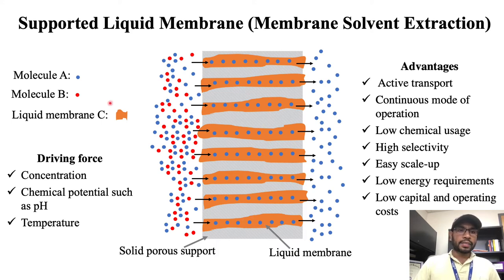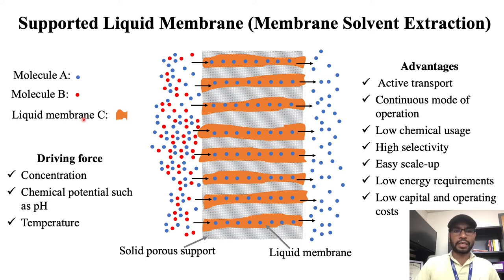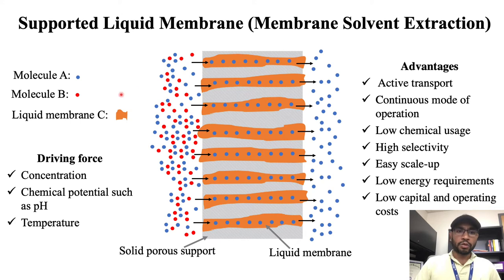Let's say there is a mixture of molecule A and molecule B, and molecule A needs to be separated from molecule B. If there is a liquid membrane — typically an organic phase — which has high affinity towards molecule A, then this liquid membrane can be used for separation of molecule A from B. The separation can be performed efficiently if this liquid membrane is anchored in a porous support.